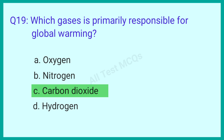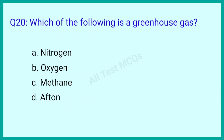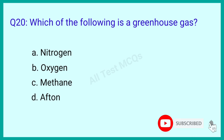Question number 20: Which of the following is a greenhouse gas? The correct answer is option C: Methane.